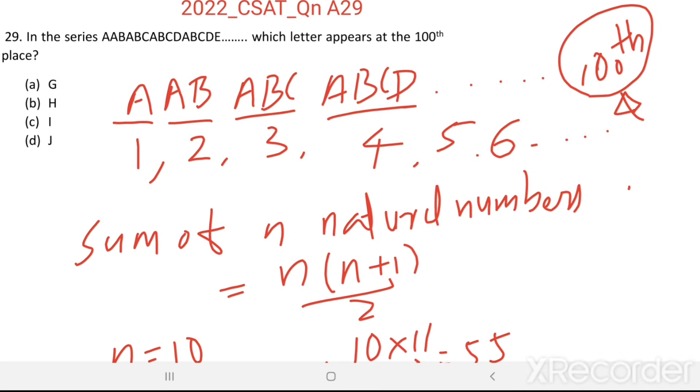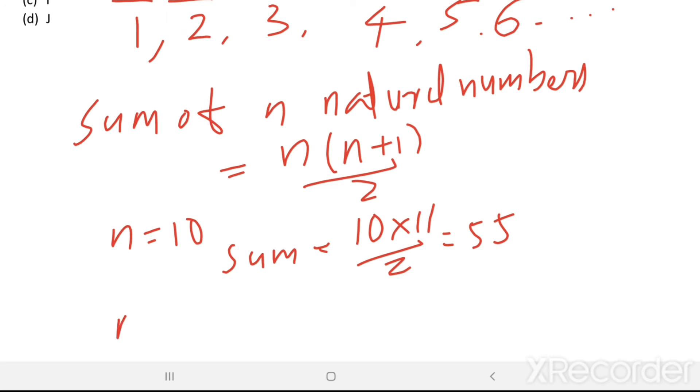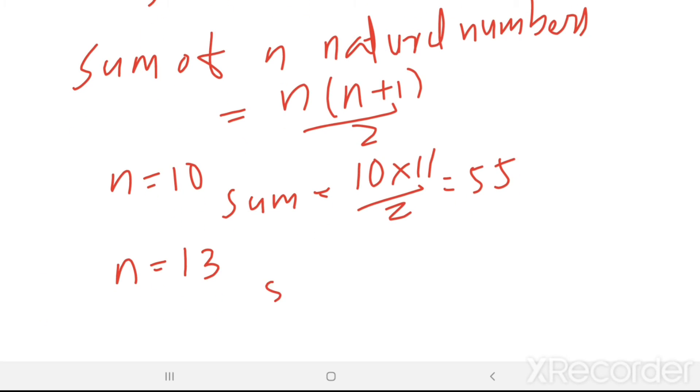But here it is 100. So let us take n equal to 13. Then sum of first 13 natural numbers equal to 13 into 14 divided by 2. We get 91.